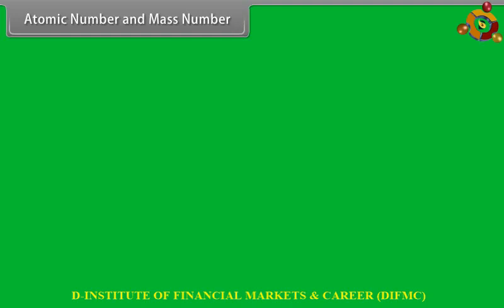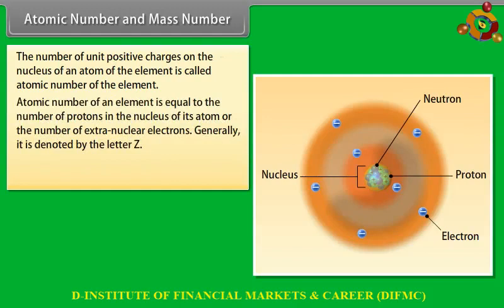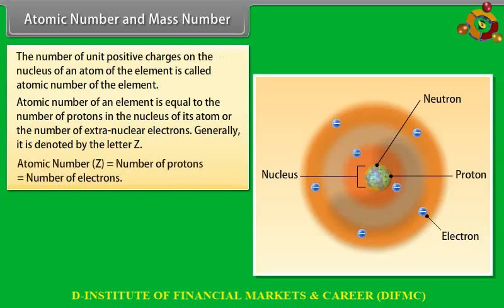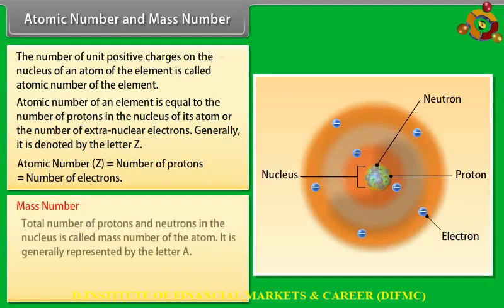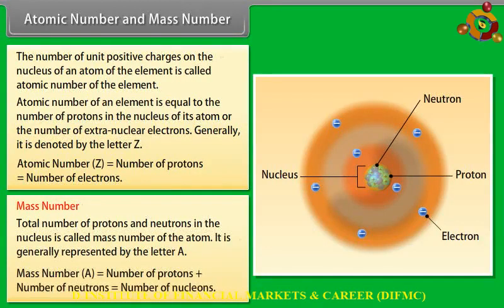Atomic number and mass number: The number of unit positive charges on the nucleus of an atom is called the atomic number (Z) of the element. Atomic number Z equals the number of protons in the nucleus, which also equals the number of extra-nuclear electrons. Mass number (A) is the total number of protons and neutrons in the nucleus. Mass number A = number of protons + number of neutrons = number of nucleons.